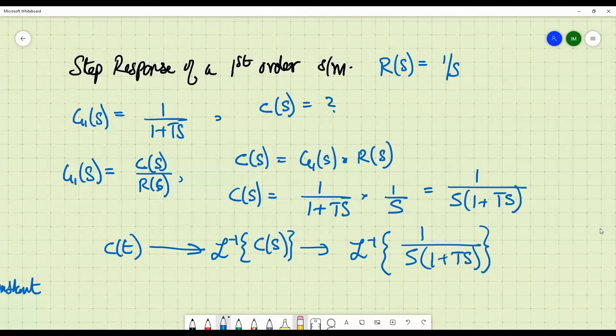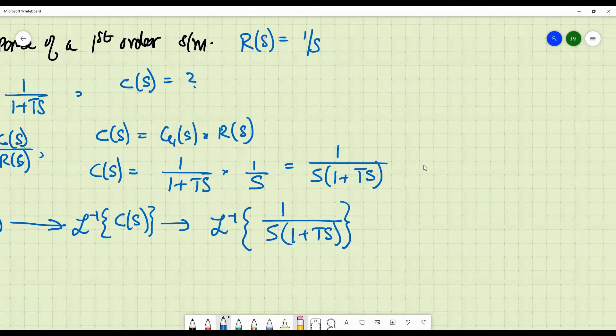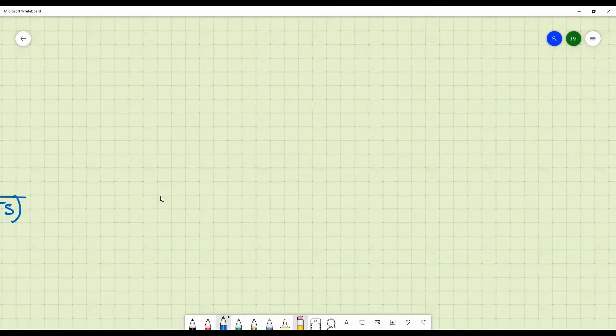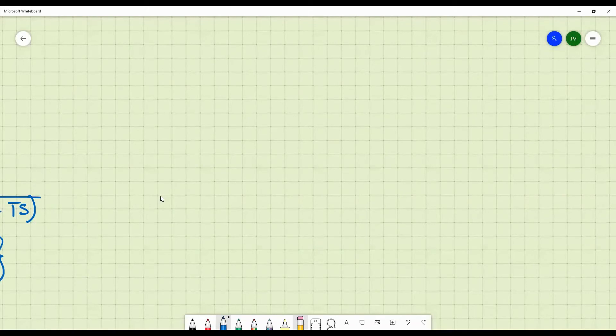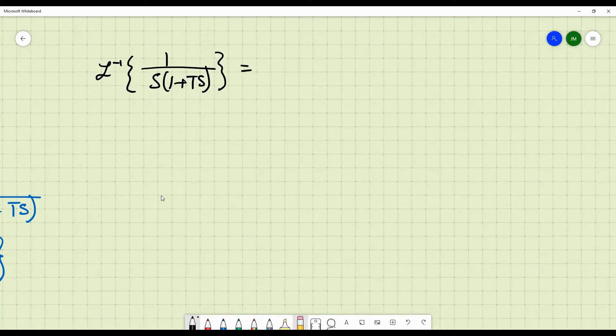So there are many methods to actually find out Laplace inverse. For first order systems, there is a pretty easy method. L inverse of 1 by S into 1 plus T S. What you do is, I wouldn't write Laplace inverse right now. Just 1 by S into 1 plus T S. We want to break this into partial fraction. So what you do is, you just write out the two terms 1 by S and 1 by 1 plus T S.